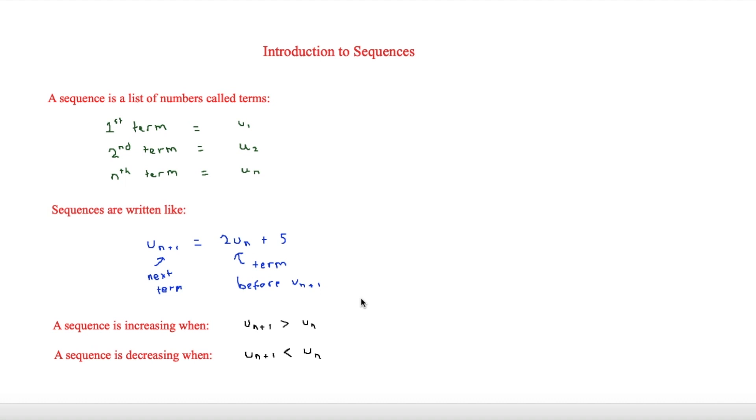The final thing to notice is that a sequence is increasing when un plus 1 is more than un. So in other words, the term after un is bigger and it's decreasing when un plus 1 is less than un. But now it's good to look at a few questions involving this.